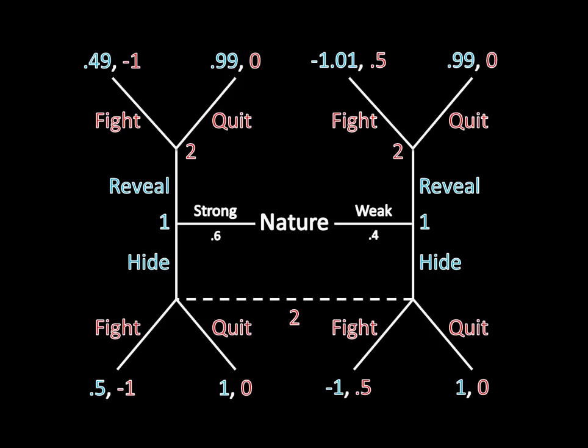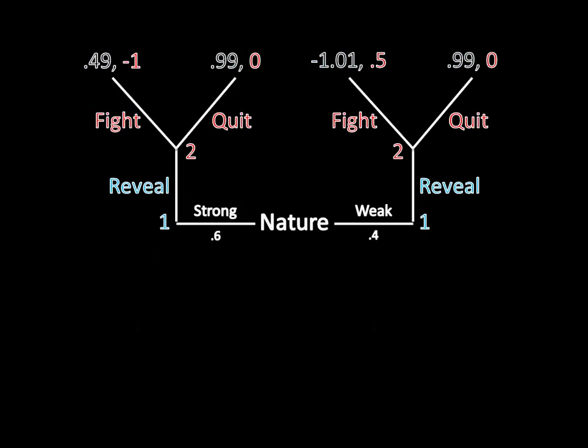The only information set Player 2 has is what happens when Player 1 hides. She doesn't actually directly observe Player 1's strategy in those circumstances. Whereas in the top half of the game tree, when Player 1 has either revealed himself to be strong in the strong case, or weak in the weak case, she knows exactly what's happened before. We can solve for the top half of the game tree very simply. She has complete and perfect information here, so it's a simple, straightforward comparison of her utilities.